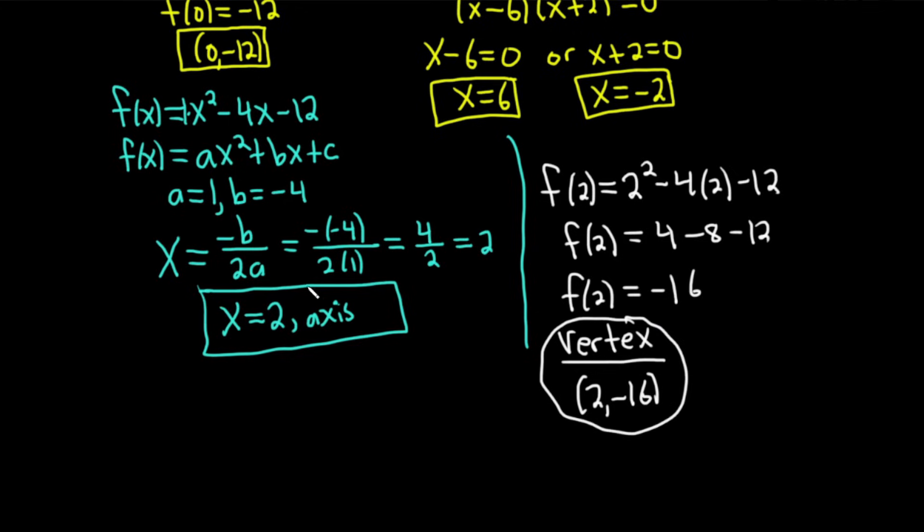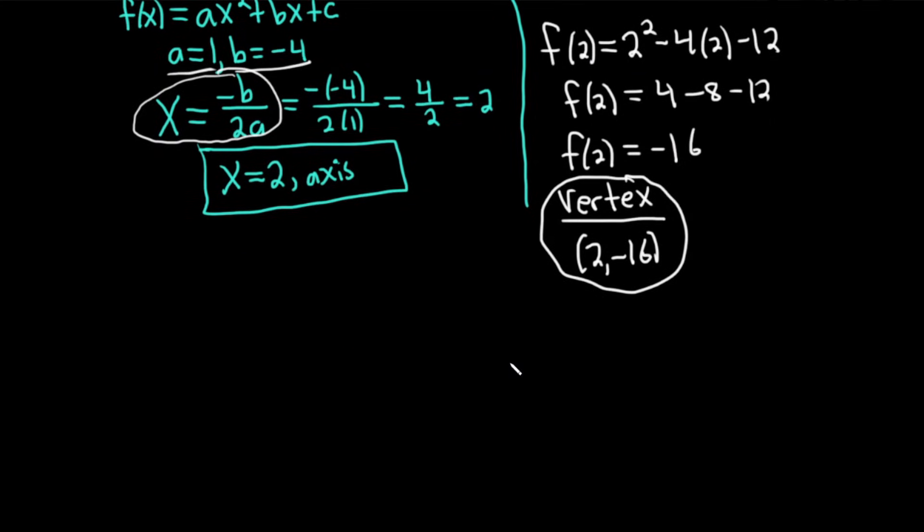Again, to find the vertex, you identify a and b. So here a was 1, b was -4. Plug them into this formula, x = -b/(2a). The answer you get, x equals that answer, is the axis. And you take this number, plug it into your function, and then that gives you the y coordinate of the vertex. We're ready to go. We're ready to do the graph. Let's do it.